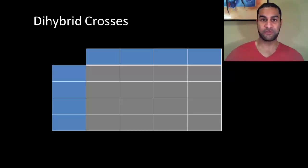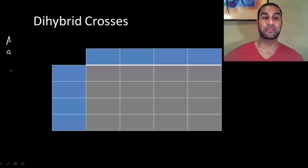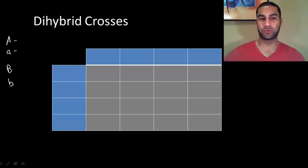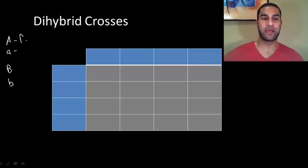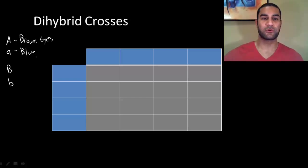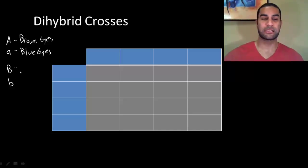Let's talk about two different traits. Let's say hypothetically I'm talking about a trait on A and a trait on B. The A trait represents eye color — the dominant is brown eyes, and lowercase a represents the recessive, or blue eyes. Then the B trait represents hair color — the dominant B is black hair, and the recessive is blonde hair.